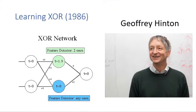The winter for neural networks continued for more than a decade. The hero who came to the rescue is Geoffrey Hinton, who showed that XOR can be learned by using multi-layer perceptrons with backpropagation. Although the idea had been conceived by other researchers before, it was Hinton's paper that clearly addressed the problems proposed by Minsky. So he is considered the father of deep learning.